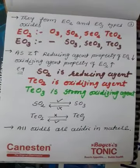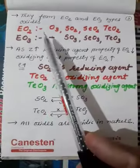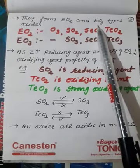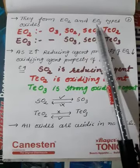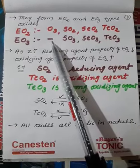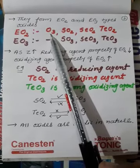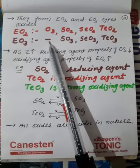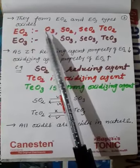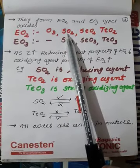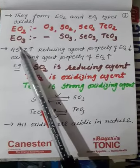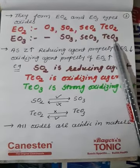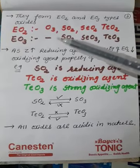Now reaction with oxygen — group 16 elements form two types of oxides: EO2 (dioxide) and EO3 (trioxide). Oxygen does not form a trioxide with another oxygen; O3 (ozone) is well known but O4 is not observed, so a dash is used for oxygen's trioxide. The dioxides are: O3 (ozone), SO2, SeO2, TeO2. The trioxides are: SO3, SeO3, TeO3.